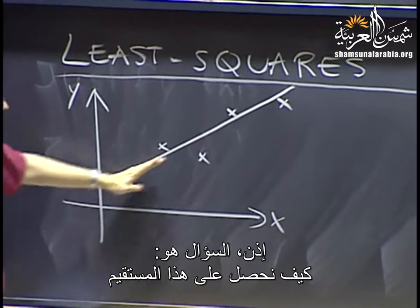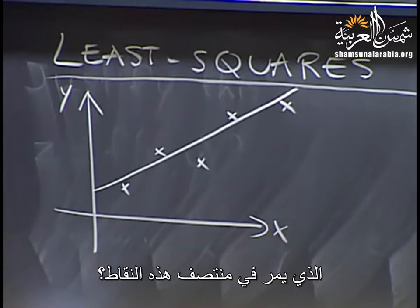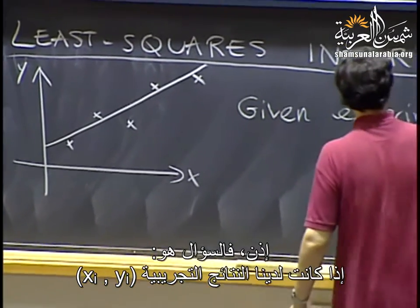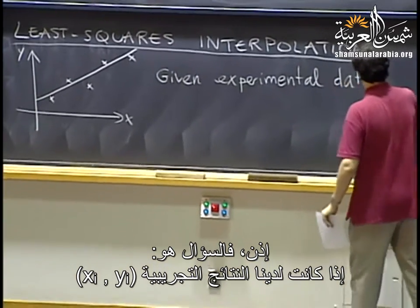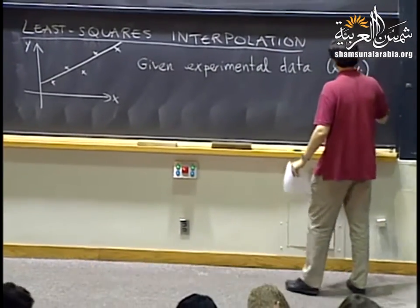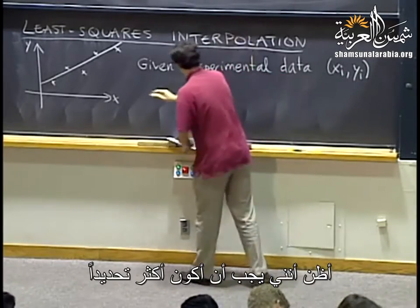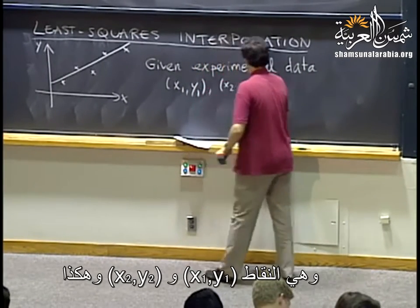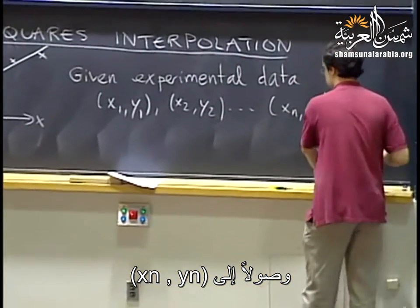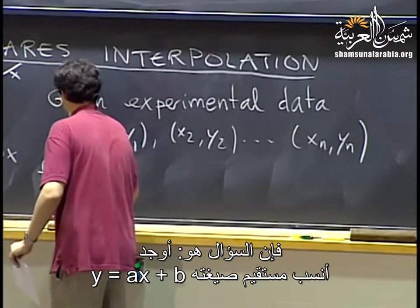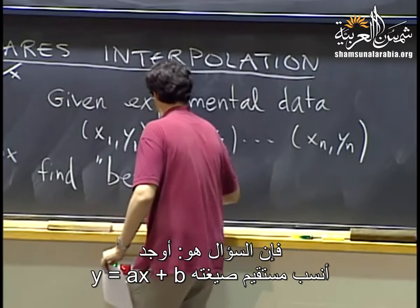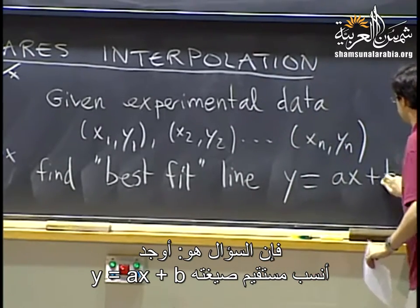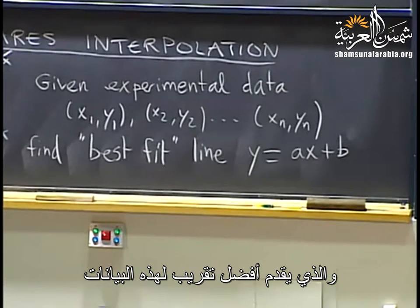The question is: how do we come up with the line that passes in the middle of the points? Given experimental data points (x1, y1), (x2, y2), ..., (xn, yn), find the best fit line of the form y equals ax plus b that approximates this data well. You can also use this to predict various things — for example, the first problem on the new homework asks you to predict how many iPods will be on this planet in ten years.